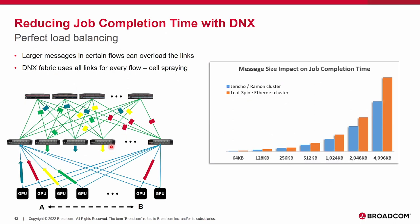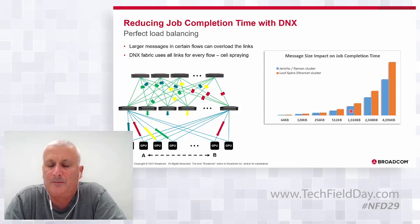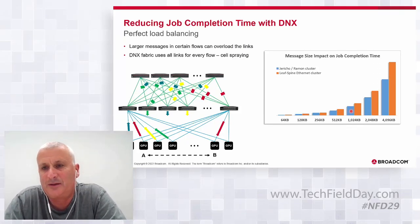After expanding all of that, the chart shows that job completion time using the Jericho/Ramon cluster — the DNX technology — is always lower. You can save up to 30% of time using Jericho and Ramon compared to a classic or standard cluster.